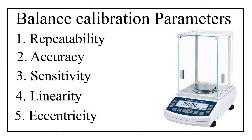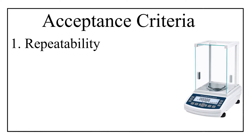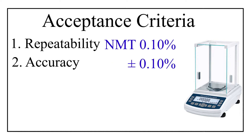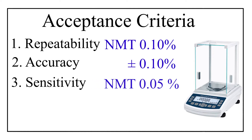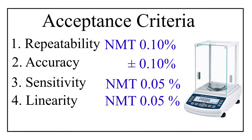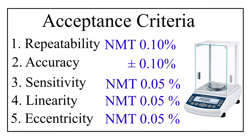Now comes the acceptance criteria for each parameter. First, repeatability: the acceptance criteria is not more than 0.10%. Then accuracy: the acceptance criteria is plus or minus 0.10%. Then sensitivity: not more than 0.05%. Then linearity: not more than 0.05%. And finally, eccentricity: not more than 0.05%.